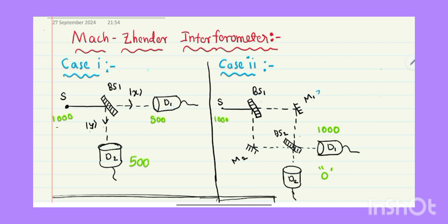The Mach-Zehnder interferometer is an experiment that consists of a single photon source, beam splitters, mirrors, and detectors. I have two cases. In the first case, I have a single photon source, one beam splitter, and detectors. A single photon encounters the beam splitter and will either be transmitted or reflected, with equal chance for both. If we send 1000 photons, roughly 500 will reach D1 and 500 will reach D2.